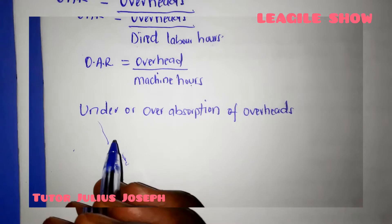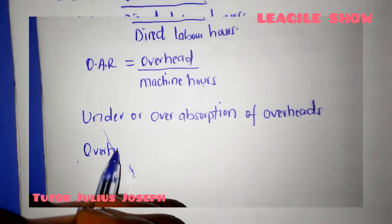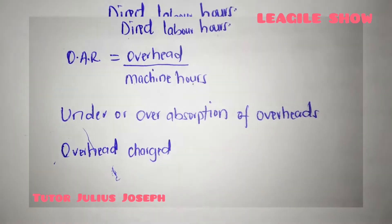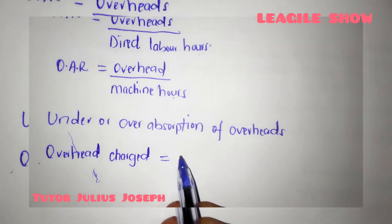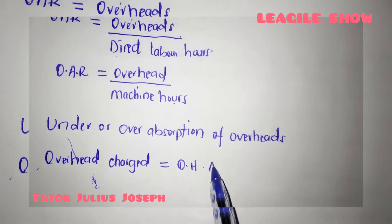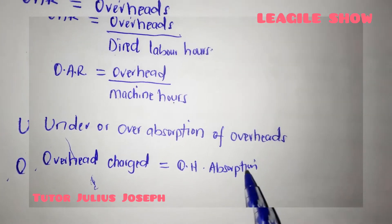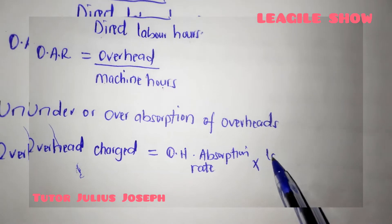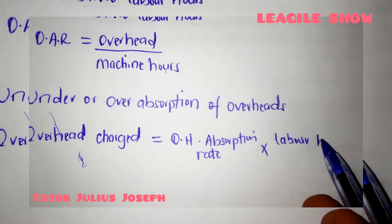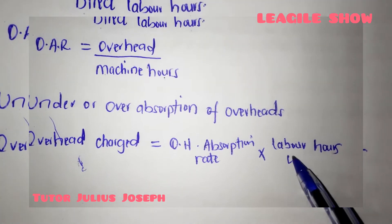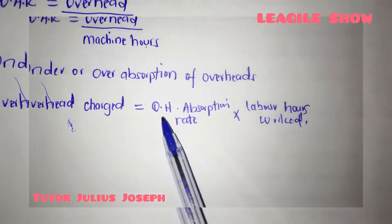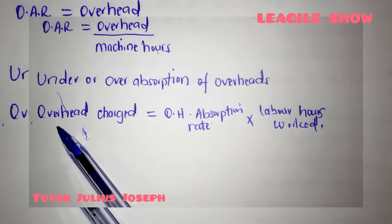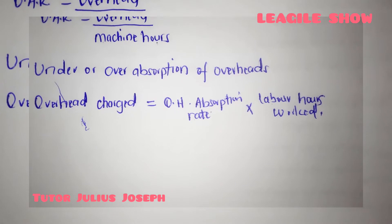Under or over absorption of overheads is calculated as follows. The first thing you have to look at is the overhead charged. The overhead charged is given by the overhead absorption rate multiplied by the labor hours worked. Taking the overhead absorption rate times the labor hours worked gives you the overhead charged.